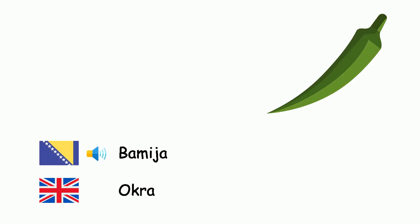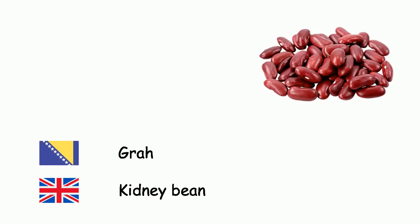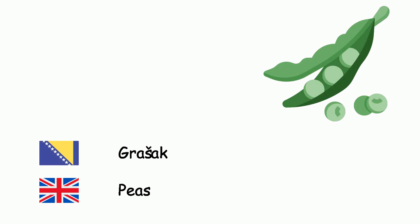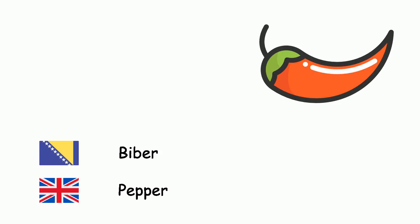Bamija. Grah. Grašak. Biber. — Okra. Kidney bean. Peas. Pepper.